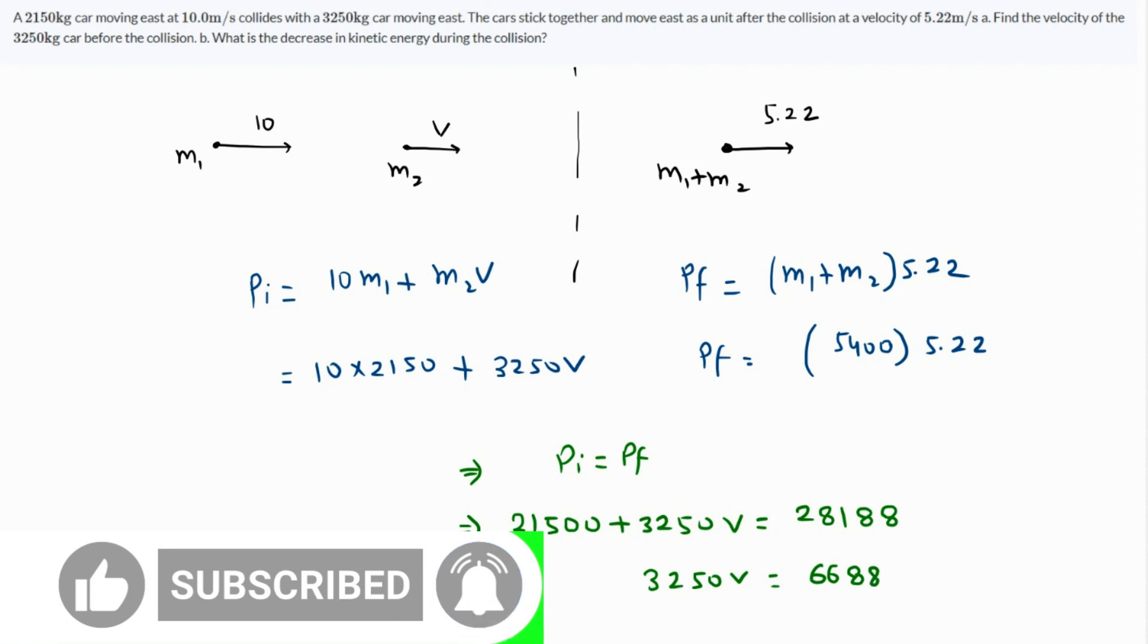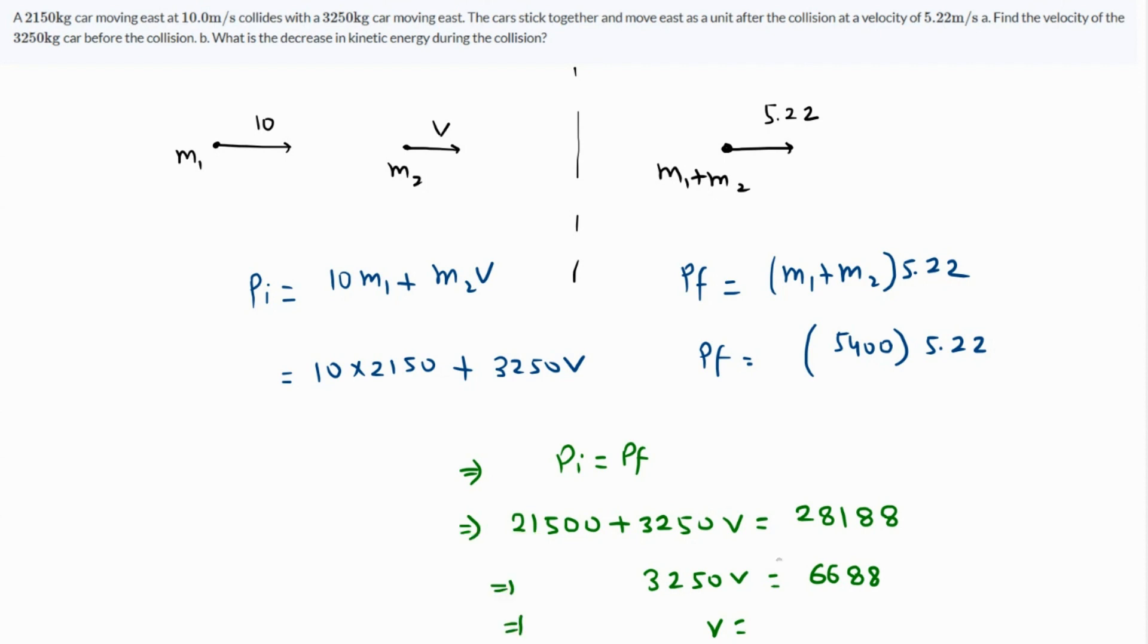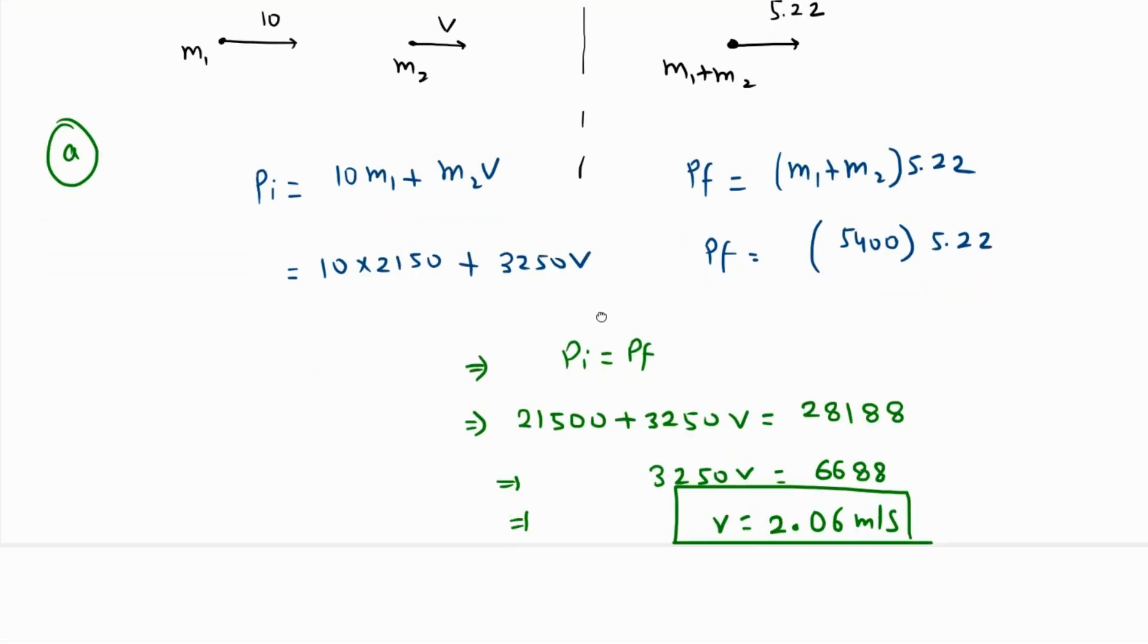And dividing both sides by 3250, the value of the velocity comes out as 2.06 meters per second. After the collision, up to two decimal places, they also need the change in kinetic energy or decrease in the kinetic energy.